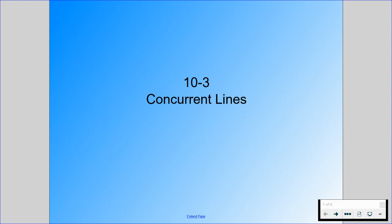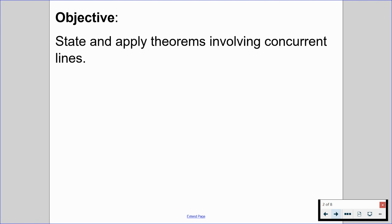Welcome back. In this video, we are going to be going through Chapter 10, Section 3, titled Concurrent Lines. The reason we work on Section 10.3 and 4.7 together is that 4.7 lays the groundwork for understanding altitudes, medians, perpendicular bisectors, and angle bisectors, while 10.3 puts them all together. By the end of this video, we should be able to state and apply theorems involving concurrent lines.